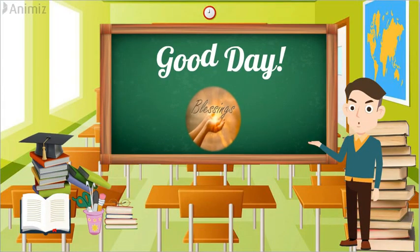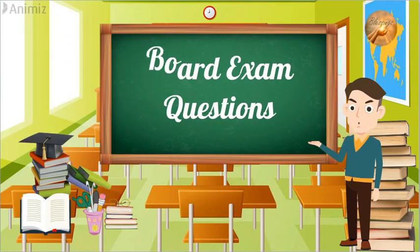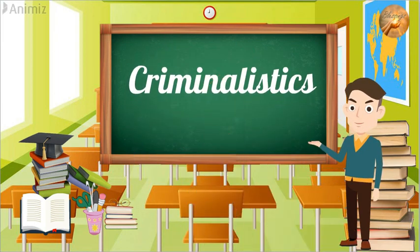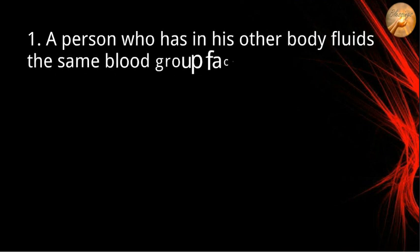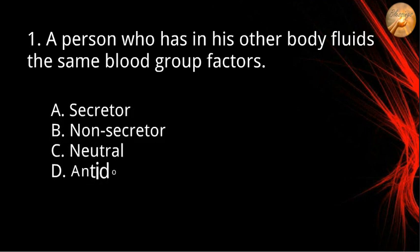Good day team, blessings. Today we are going to rationalize some of the board exam questions in criminology licensure examination in the subject area of criminalistics. Number one: a person who has in their body fluids the same blood group factors. A) secretor, B) non-secretor, C) neutral, D) antidote. The correct answer is letter A, secretor.